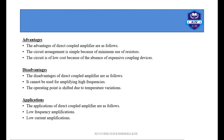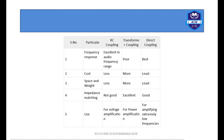Applications of direct coupling include low-frequency and low-current amplification. The comparison chart summarizes: for frequency response, RC coupling is excellent over the audio frequency range; transformer coupling is not preferred; and direct coupling gives the best output. Cost-wise, RC coupling is least expensive, transformer coupling is most expensive, and direct coupling is the least costly. Impedance matching is best with transformer coupling. RC coupling is used for voltage amplification, transformer coupling for power amplification, and direct coupling for amplifying extremely low frequencies.